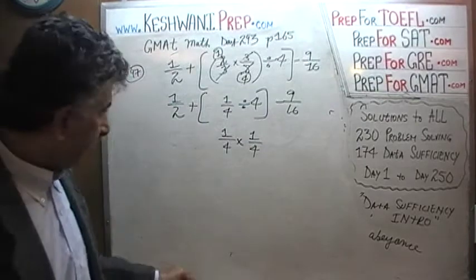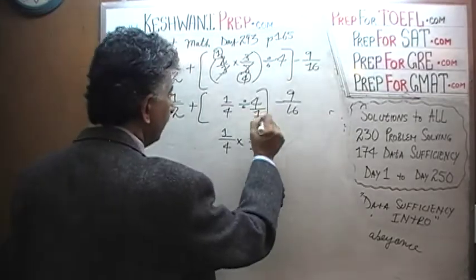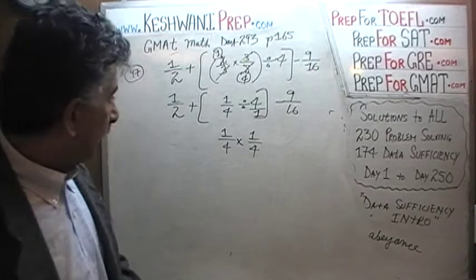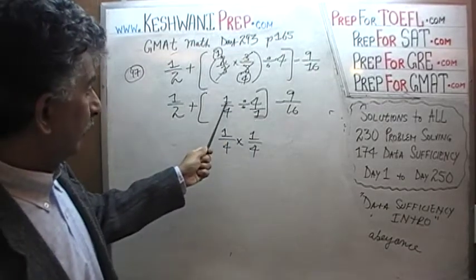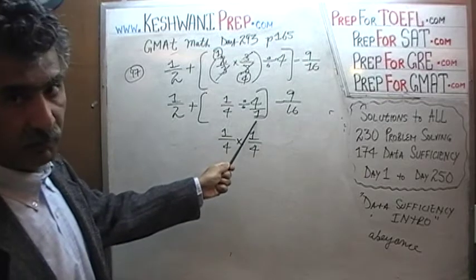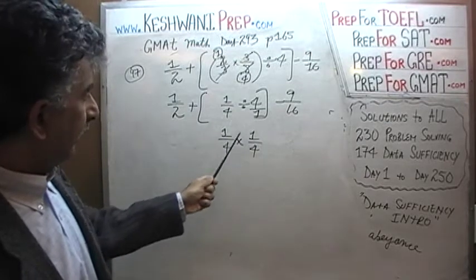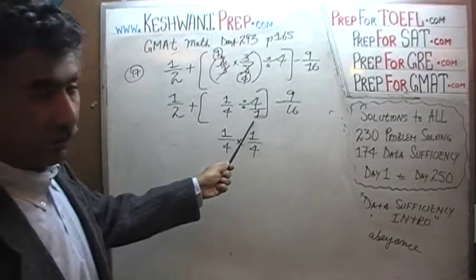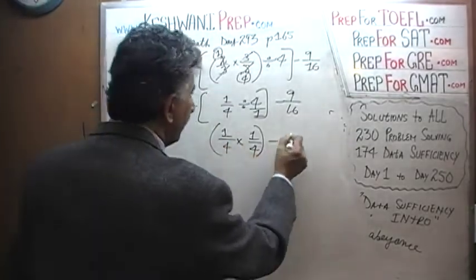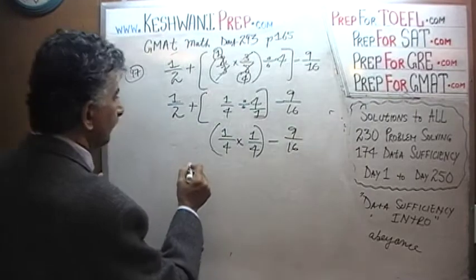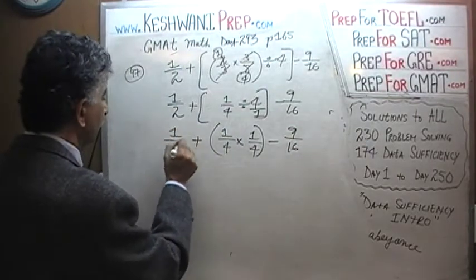1 over 4 divided by 4 is the same as 1 over 4 times 1 over 4. Because the rule is that, because this is 4 over 1, you see? 1 over 4 divided by 4 over 1 is that when we have one fraction being divided by another fraction, what do we do? We take the top fraction and we multiply it by the reciprocal of the bottom fraction. So it becomes 1 over 16. Minus 9 sixteenths. And plus 1 half. We are almost done.